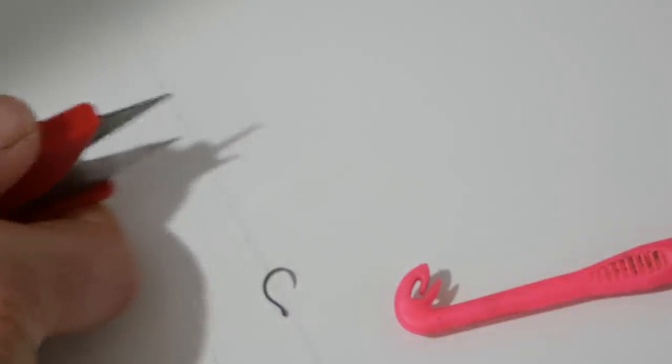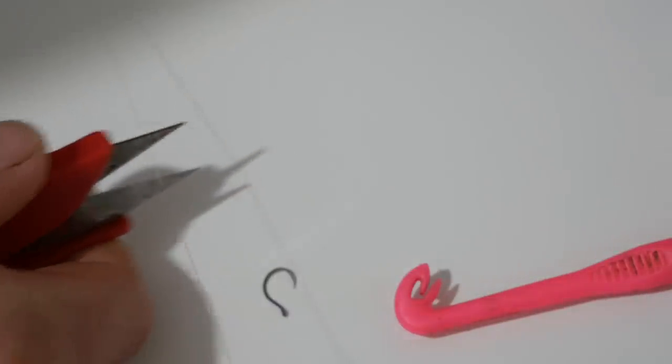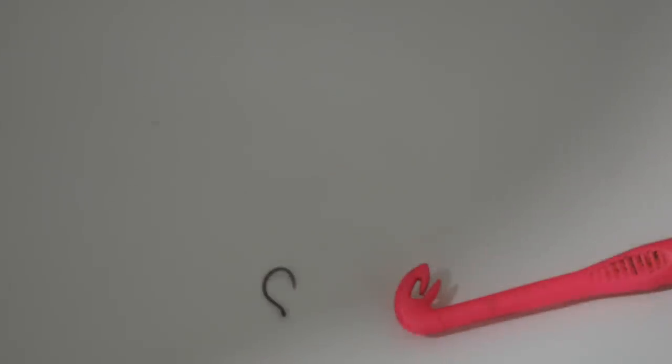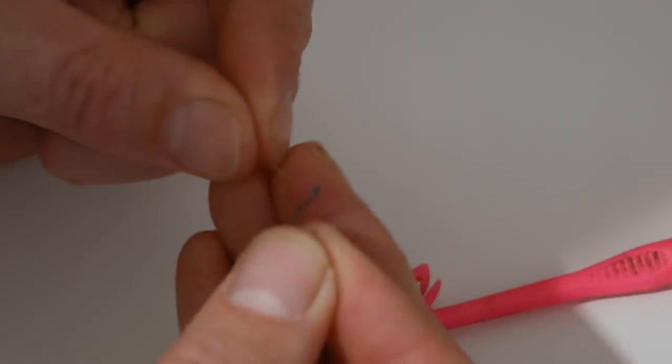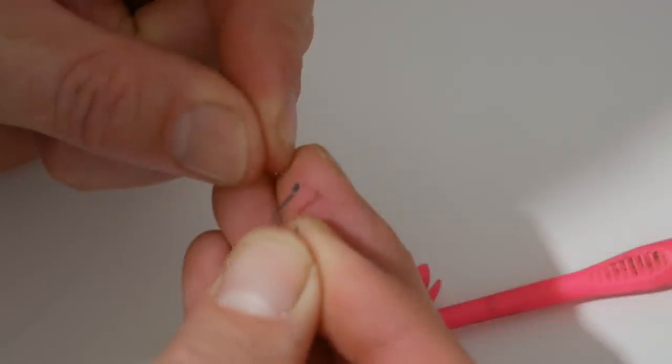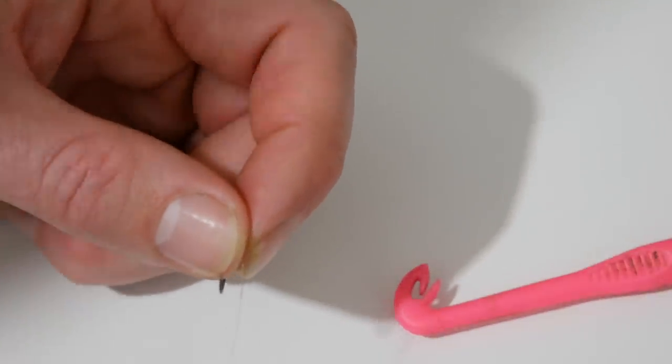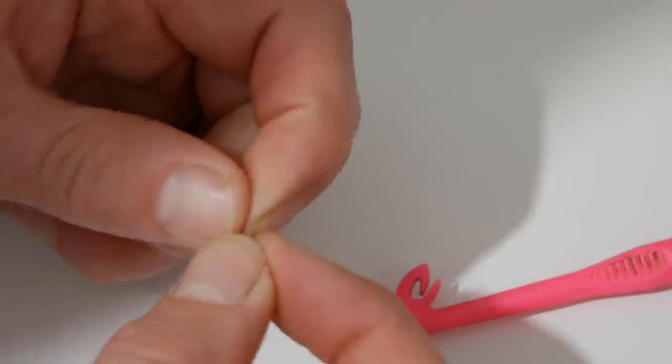I'm going to trim off maybe a foot of line so we've got plenty of line to work with. Now hook tie. So we're going to tie our hook on with a knotless knot, again through the back of the hook first. It's amazing how many people I see get that wrong as well. So we're going to go through the back of the hook first.